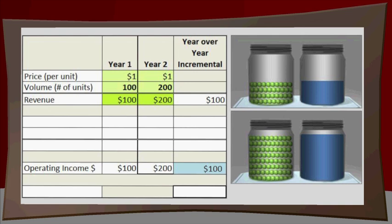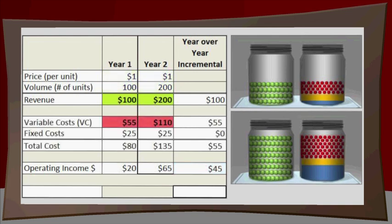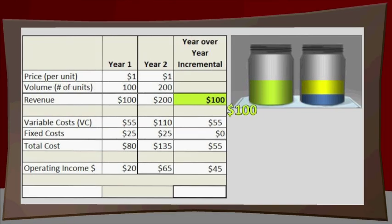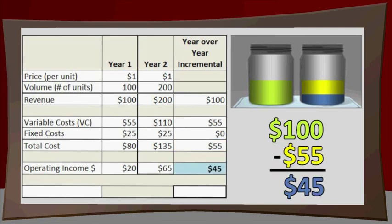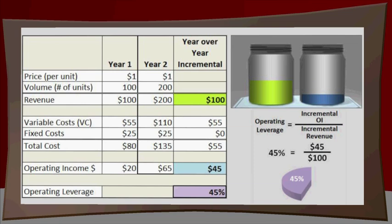Operating income at this point is equal to revenue. As volume increase doubles our revenue, it also doubles our variable costs. Fixed costs are not directly affected by volume increases and are unchanged. As a result, we produce $100 in incremental revenue and, after deducting $55 in total cost, $45 of incremental operating income. Taking the ratio of incremental operating income dollars and incremental revenue over the two periods, we recognize 45% operating leverage.